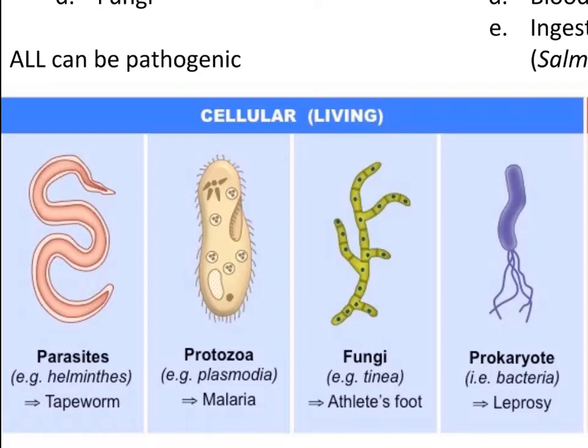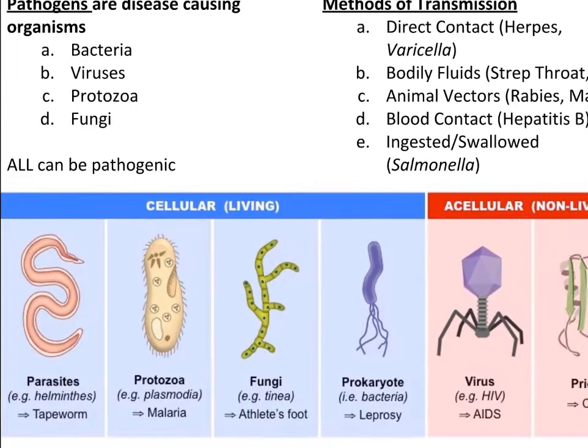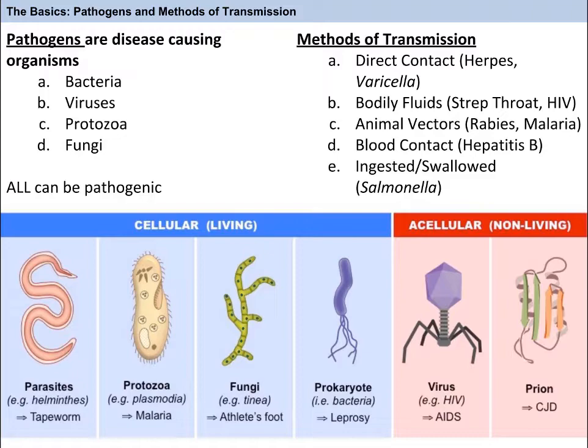Bacteria can be anything from pneumonia or streptococcus. Viruses can be things like varicella, HIV, or Ebola. Protozoa can be diseases like malaria or dysentery, or the STI trichomoniasis. Parasites include tapeworms, scabies, lice, and giardia. Sounds like we just made a trip to the infectious disease zoo.